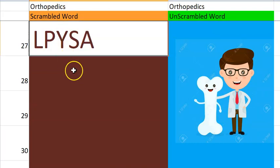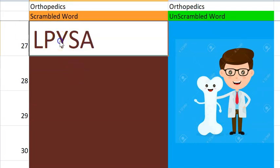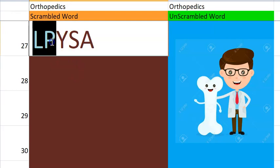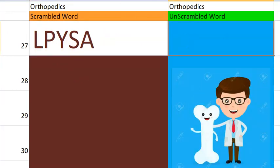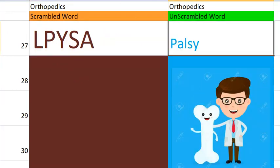27th one — very easy. Think about a word starting with P, cerebral, etc. Palsy. Very good.